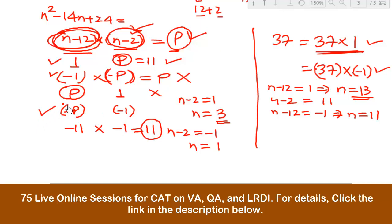So what would be the answer? It says for how many values of n? So what would be the answer? The answer is 2.